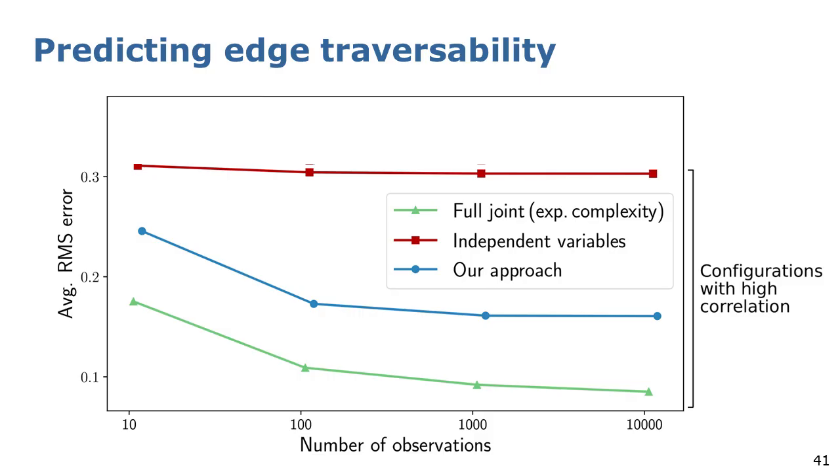First, we considered the case in which changes are highly correlated. Our approach provides good predictions already after a few observations. The predictions improve with the number of observations as for the full joint distribution. Instead, the independent variables model is not able to capture the correlation among the edges, and thus leads to worse predictions.